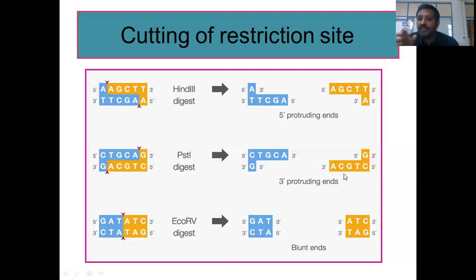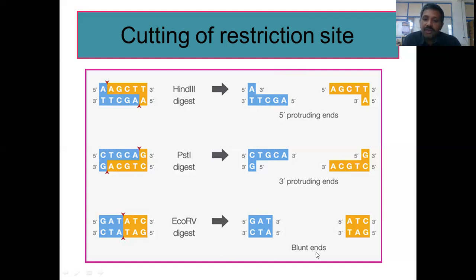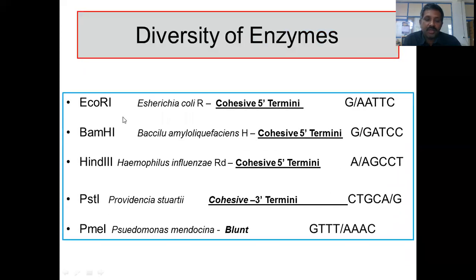In general, in gene manipulation, scientists prefer to use enzymes that give cohesive ends because they are easy to anneal with other molecules having the same protruding ends. Blunt-end enzymes are used very rarely. For example, EcoRI and BamHI give cohesive five prime termini; HindIII also gives cohesive five prime termini; PstI gives cohesive three prime termini; and SmaI and PvuII give blunt ends.